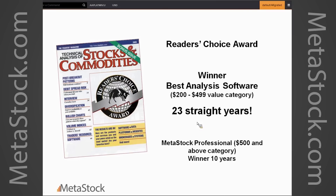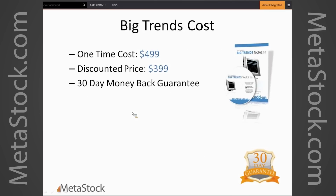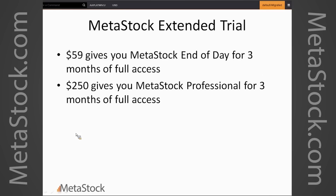MetaStock has been voted the best analysis software in its value category for 23 straight years. Big Trends typically is $499. With the holiday promotion, you can get it at $100 off - $399 - and it comes with a 30-day money-back guarantee. If you decide it didn't fit your strategy, you get a full 30-day refund - no restocking fee, no hidden costs.